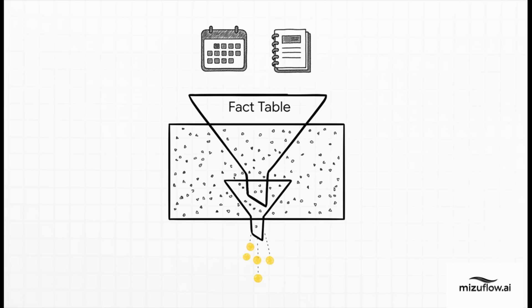Your chart of accounts and your calendar tables — those dimensions — are what let you slice and dice your trial balance data. So if you want to see just revenue for December, those two tables work together to filter that big fact table and pull out exactly the number you need. This relationship is what makes the whole report dynamic.